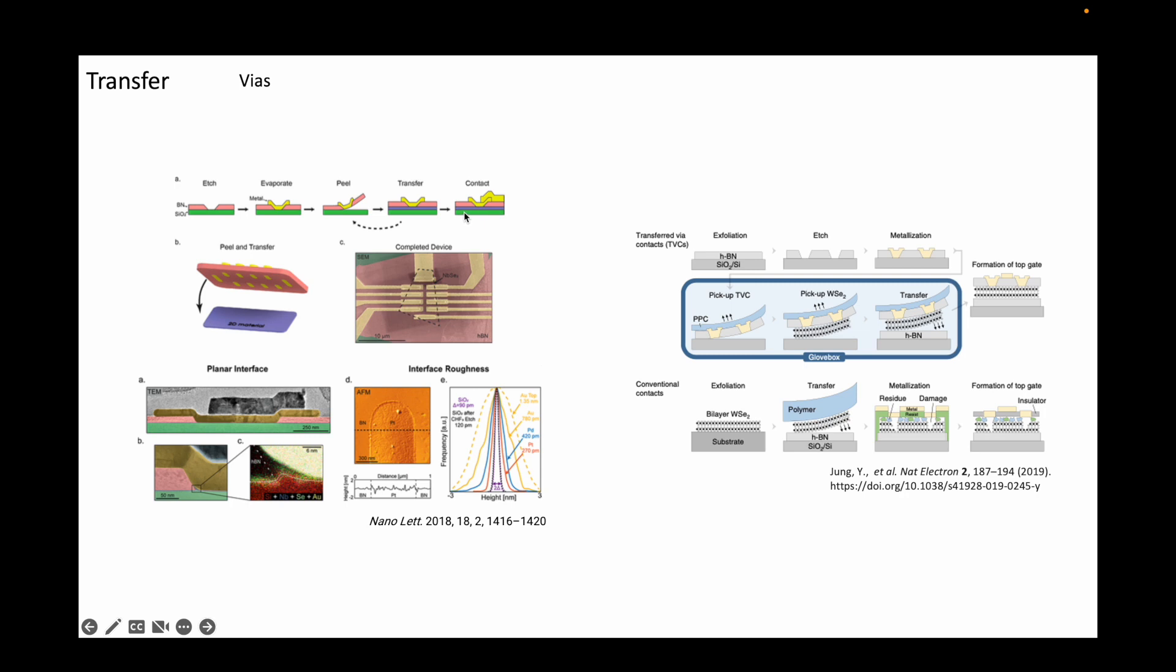Finally, the VIA contacts are connected to the rest of the leads by lithography. This method is quite powerful because it allows the encapsulation and contacting of air-sensitive materials, which may react with air during the electrode patterning step.